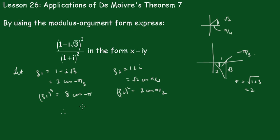Therefore we divide these two. Z1 cubed over z2 squared. Which equals 8 cis minus pi over 2 cis pi upon 2.